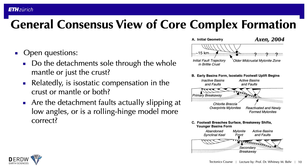To summarize, there's a general consensus view of core complex development. But there are still open questions as to whether detachments sole through the whole lithospheric mantle or just the crust — related to whether isostatic compensation occurs in the lower crust, the mantle, or both. And there are remaining questions, to be discussed in the next lecture, as to whether detachment faults actually slipped at low angles or whether they represent a rolling hinge-type process.